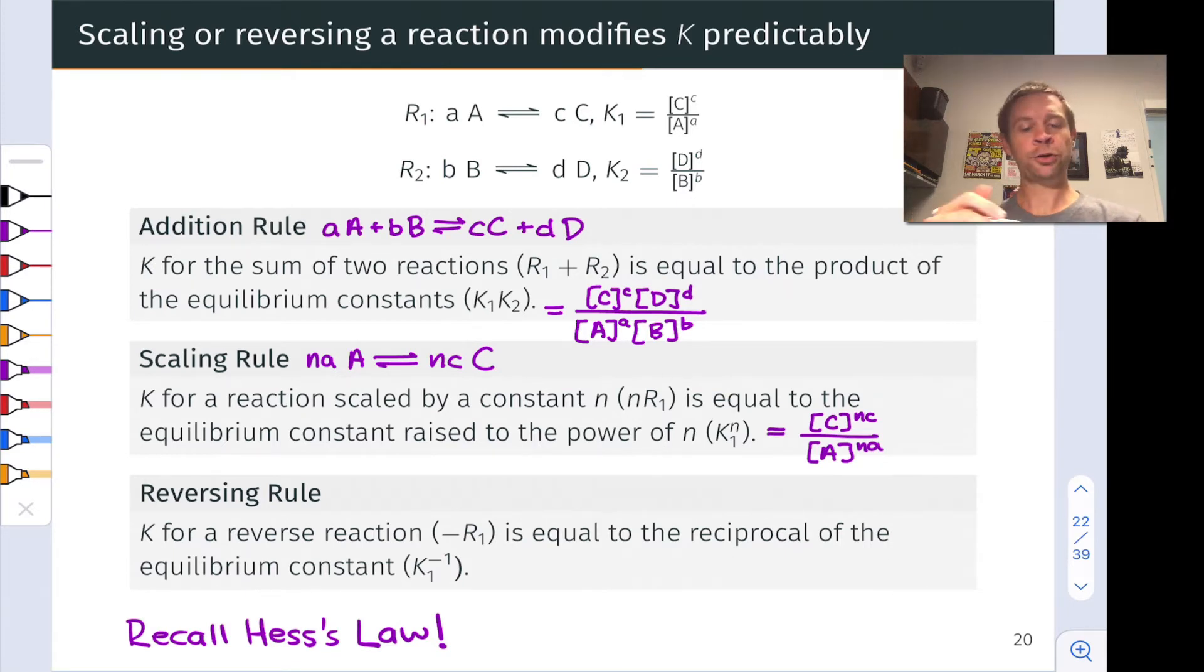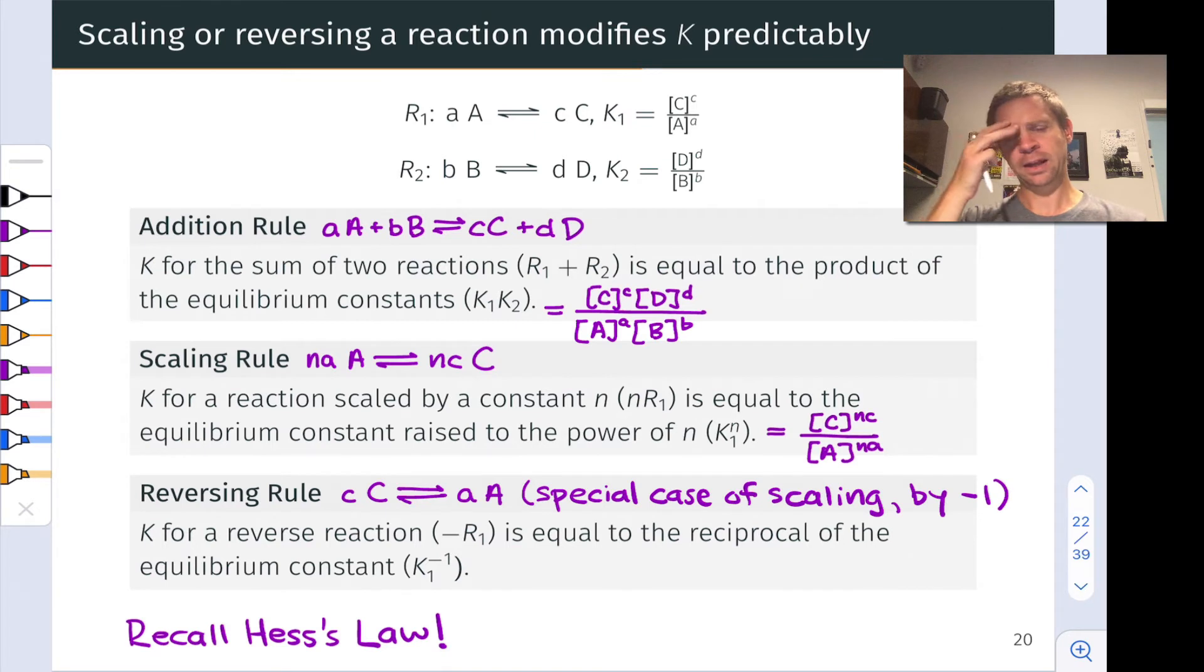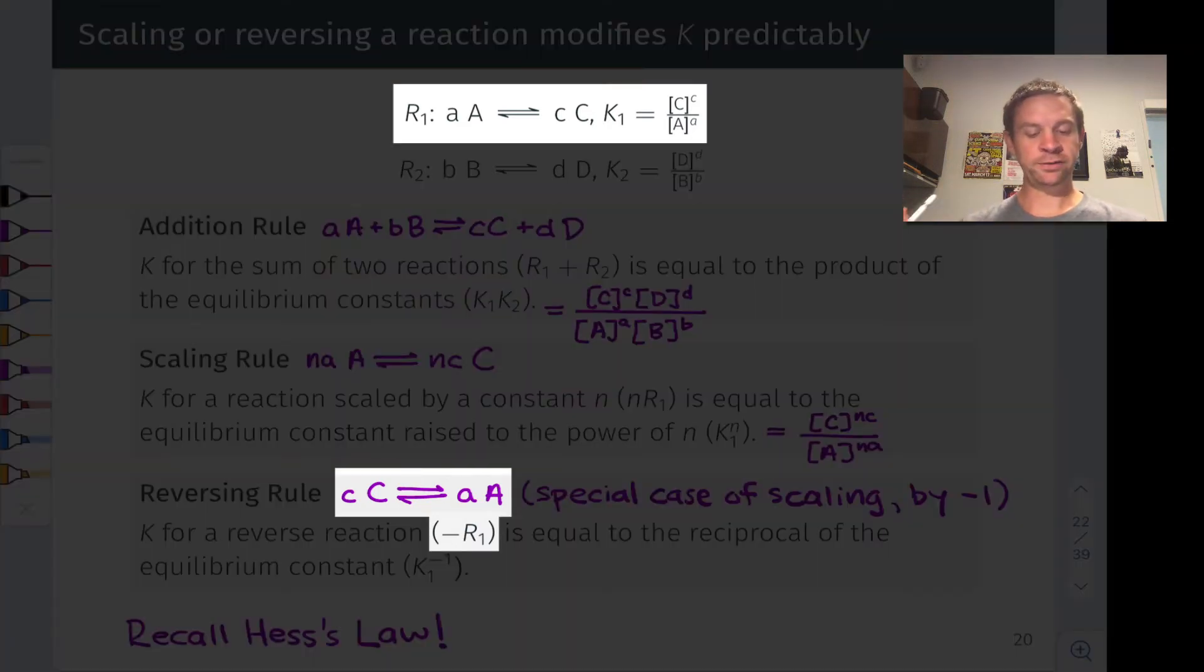Finally, we have the reversing rule, which is actually really just a special case of scaling if you think about it. For example, imagine we switch the reactants and products in reaction one. This is tantamount to negating the stoichiometric coefficients. C, which was a product coefficient, is now a reactant coefficient. And A, which was a reactant coefficient, is now a product coefficient.